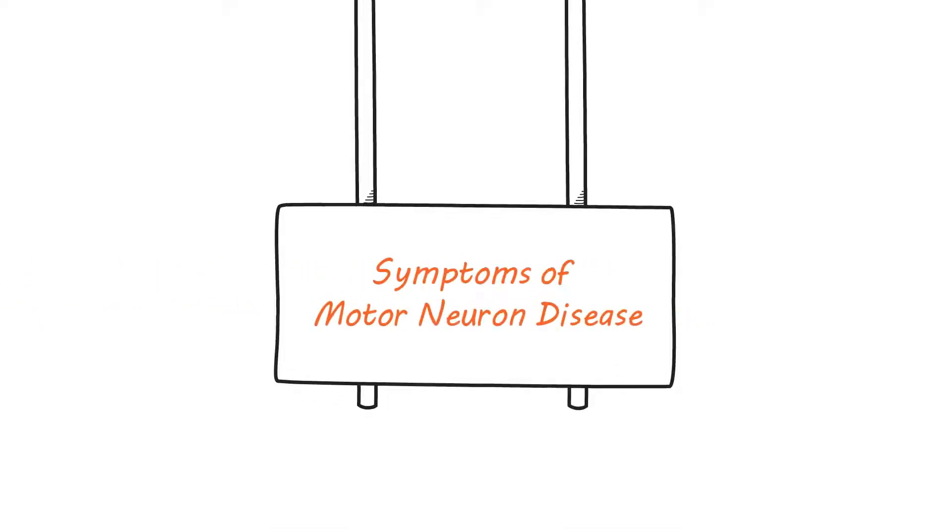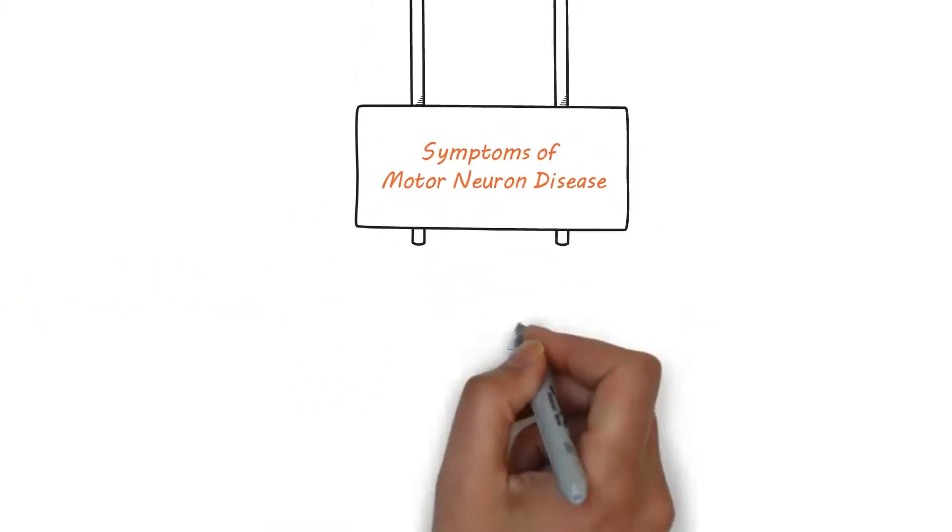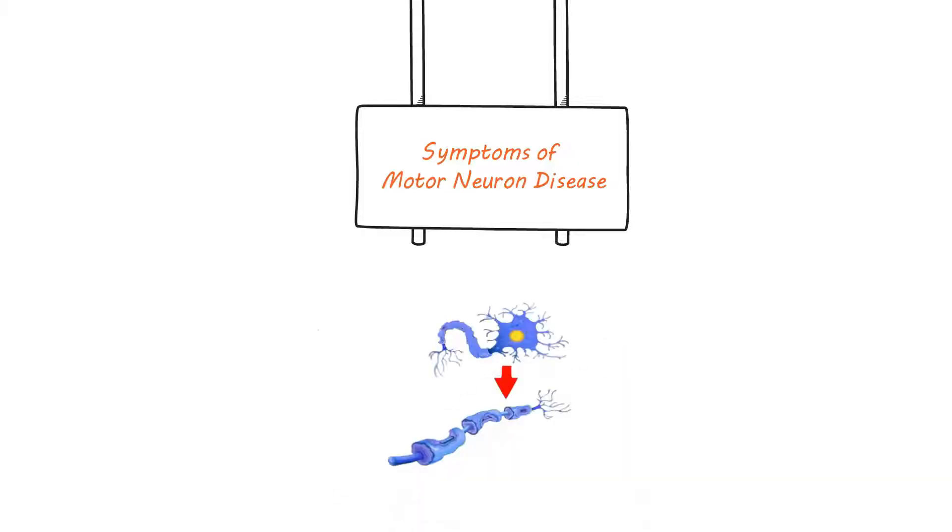Symptoms of Motor Neuron Disease. The symptoms of motor neuron disease can vary depending on the type of disease and the individual. However, all forms of motor neuron disease are characterized by progressive weakness and atrophy of the muscles. Some common symptoms of motor neuron disease include: